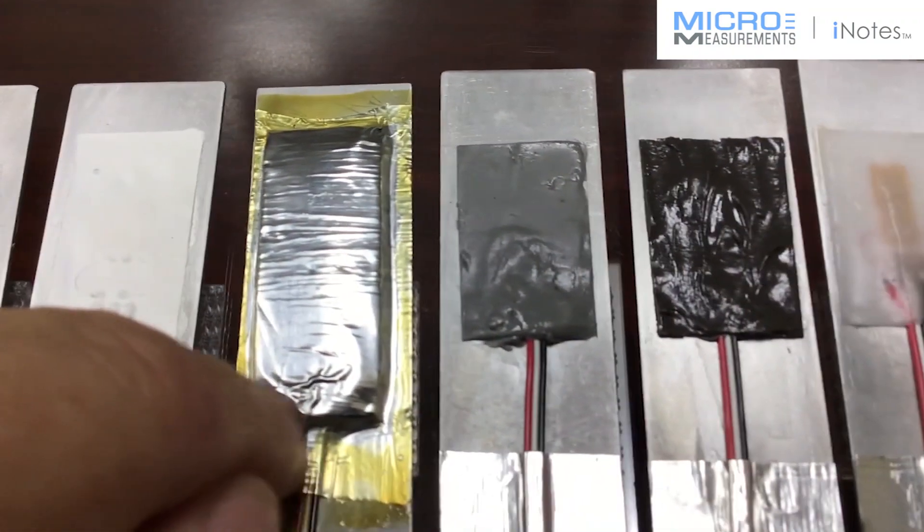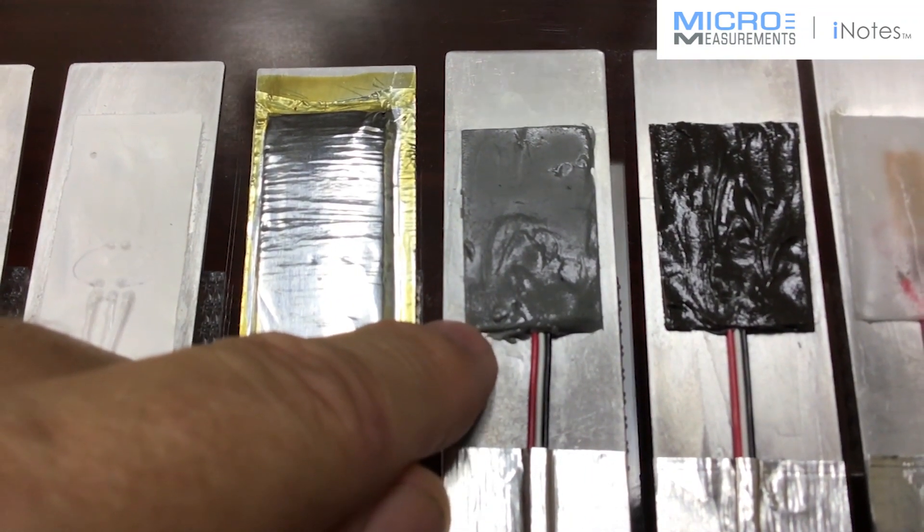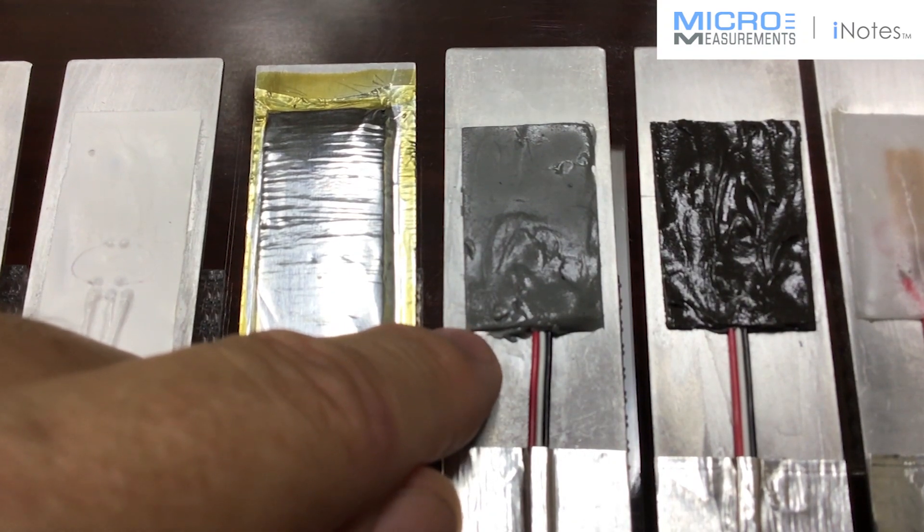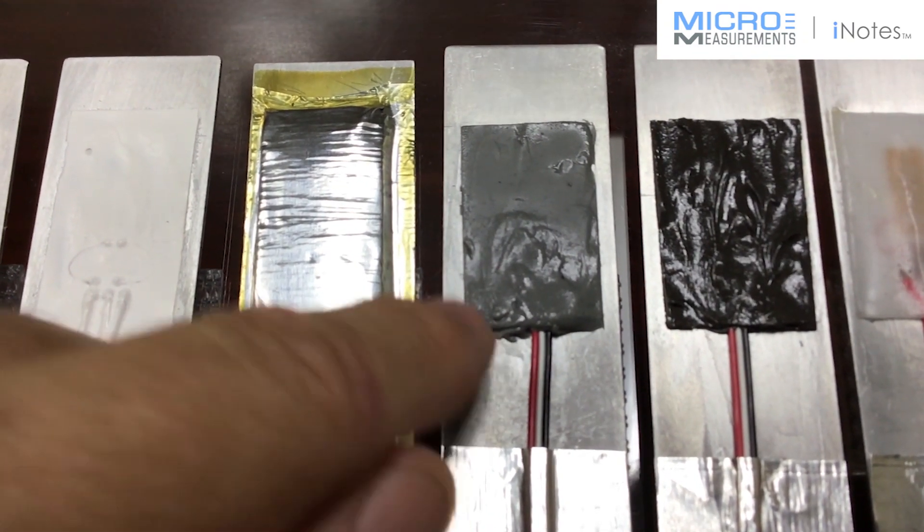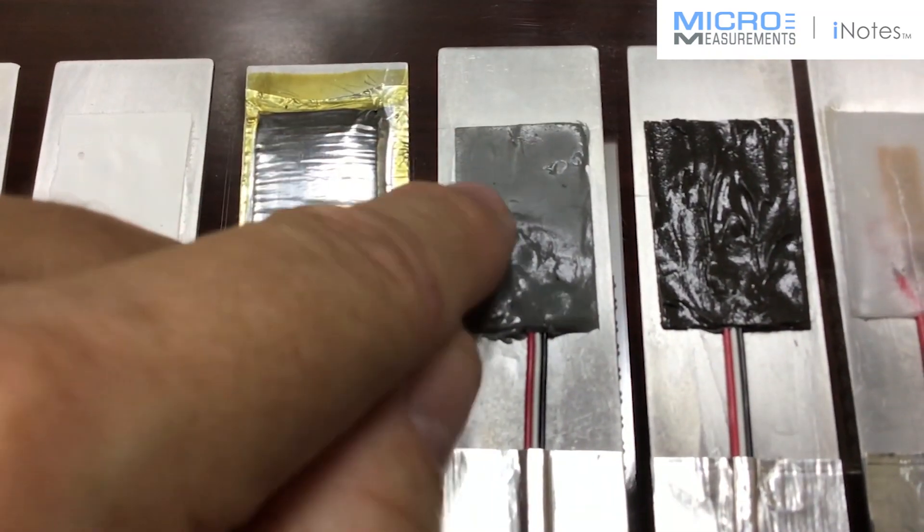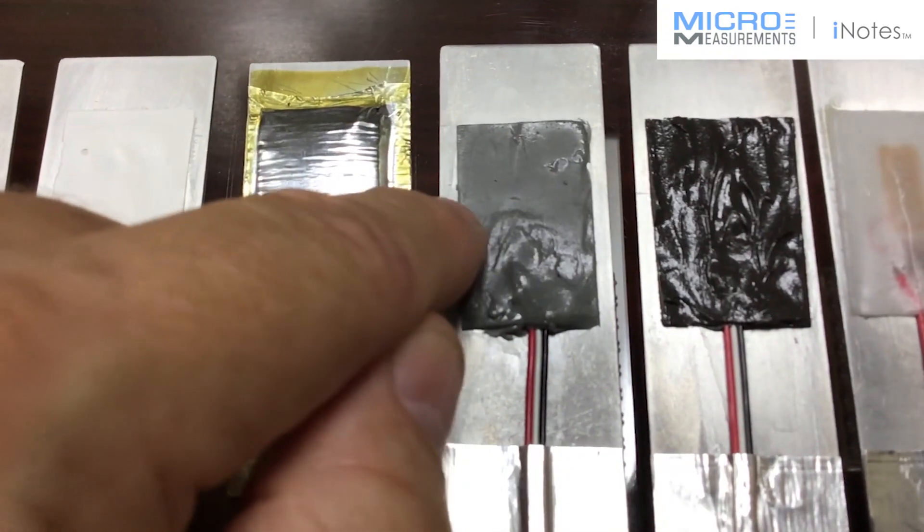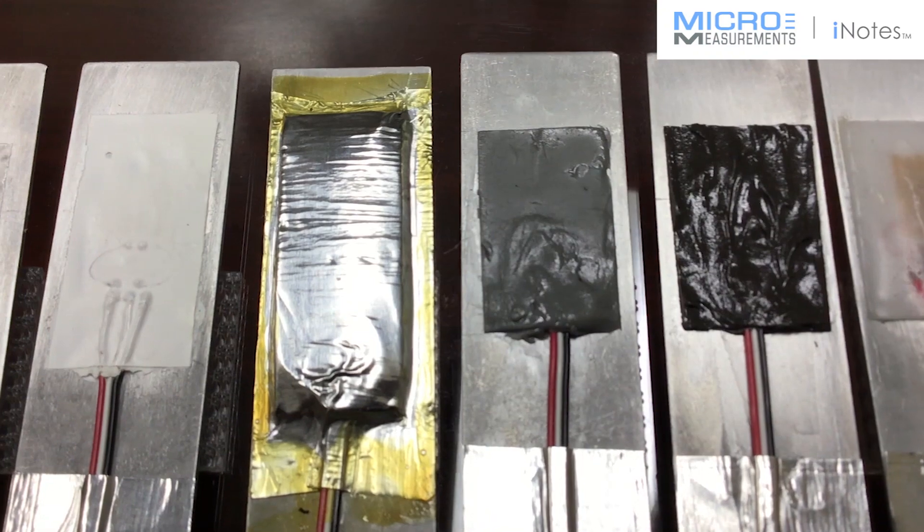The next one, this is M-Coat FBT. This is a butyl rubber. We take the butyl rubber and we throw some solvent in it and we shake it up so that we can put it in a big tube like a big tube of toothpaste. Then you can squeeze it out. I don't know if you can see this from the camera, but this coating is still tacky. It stays soft. It's a very good moisture barrier and also very low reinforcement.